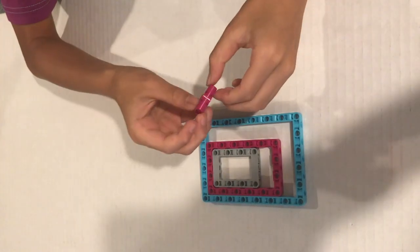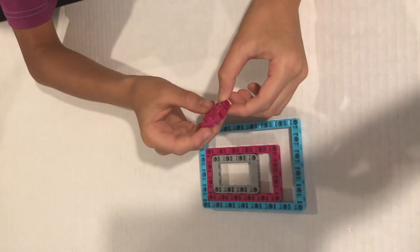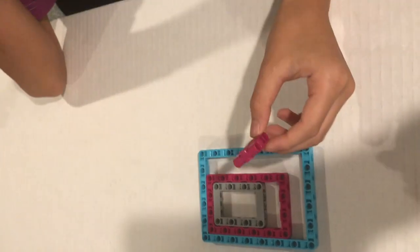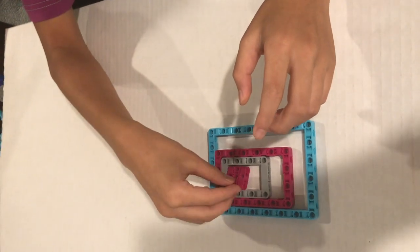To connect 3D structures easier, Spike Prime also now has this 3 by 3 biscuit connector to make it easier to connect large 3D structures together.